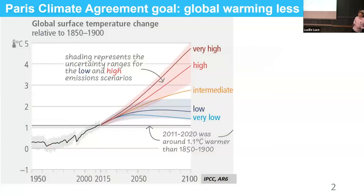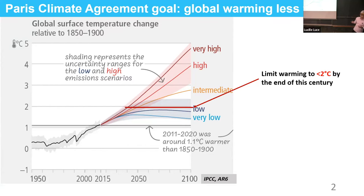Starting from the increment of global warming levels, global surface temperature has been increasing from the last century. The temperature of the past decade was around 1.1 degrees warmer than the pre-industrial level. It is extremely likely that this temperature increase will exceed 1.5 degrees around the middle of this century. In order to mitigate this increasing trend, the Paris Climate Agreement sets a goal to limit warming to less than 2 degrees by the end of this century.